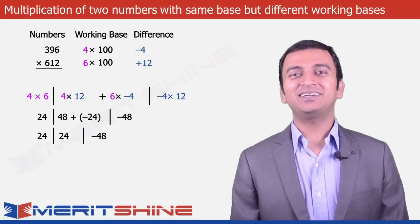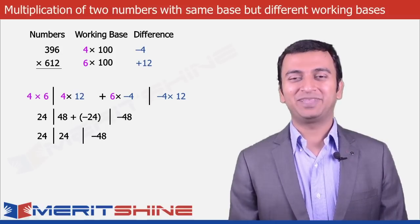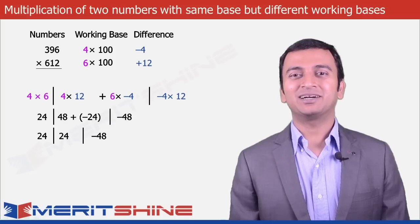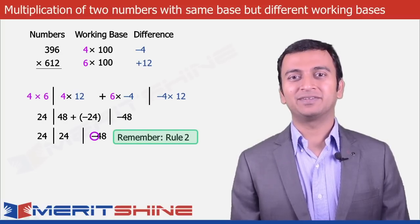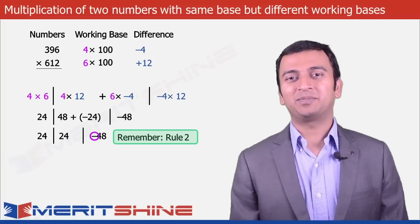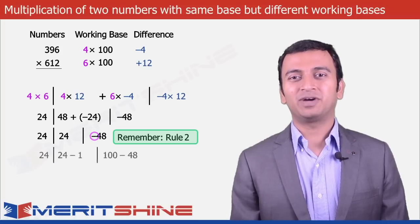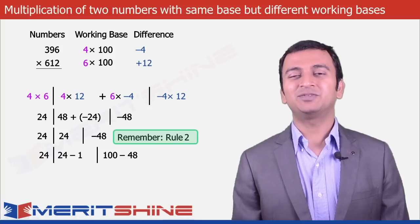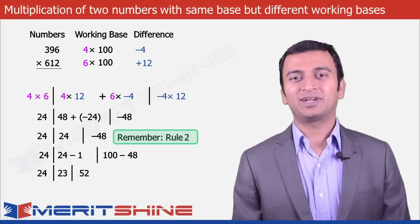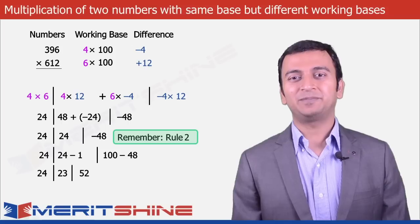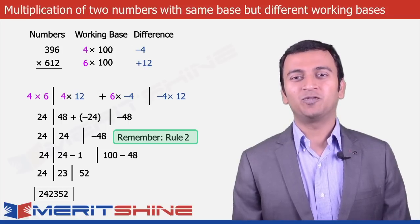To write down our final answer we need to club these parts. But Rule 2 says none of our parts can be negative. So to make the third part positive we borrow 1 from the second part, making it 24 minus 1, which is 23. The third part then becomes 100 minus 48, giving us 52. So our final answer would be 242352.